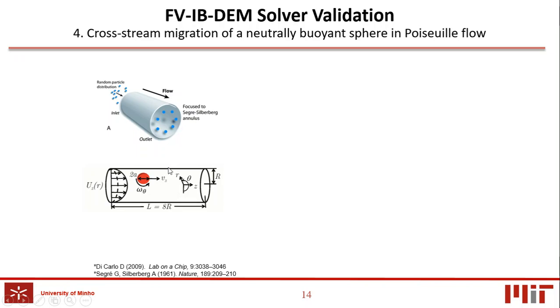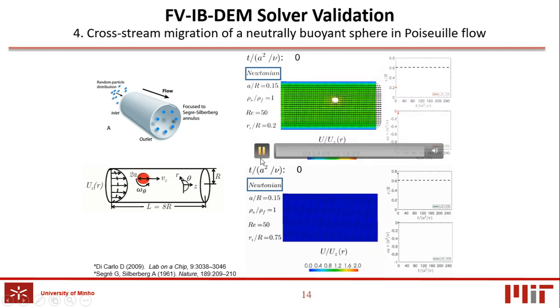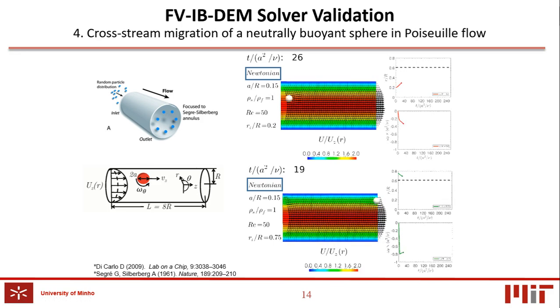We reproduce this effect using a tube ratio of A over R equals to 0.15 and Reynolds number equals to 50, for two different initial release particle positions, equals to 0.2 and 0.75. As seen in the videos, the numerical results obtained compare well with the theoretical equilibrium position of 0.6.